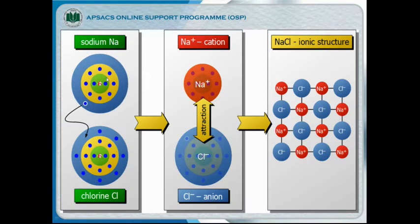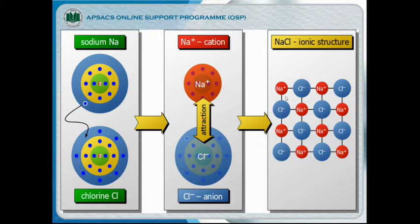Sodium metal loses one electron which is transferred towards the chlorine atom, and the chlorine atom is converted into a chloride ion. Sodium becomes the positive ion, that is the cation, and chlorine becomes the negative ion, that is the anion. Due to opposite attraction — positive and negative — they attract each other and form sodium chloride. In the crystal structure of sodium chloride, each positive sodium ion is surrounded by chloride ions and each chloride ion is surrounded by sodium ions, forming a three-dimensional structure.